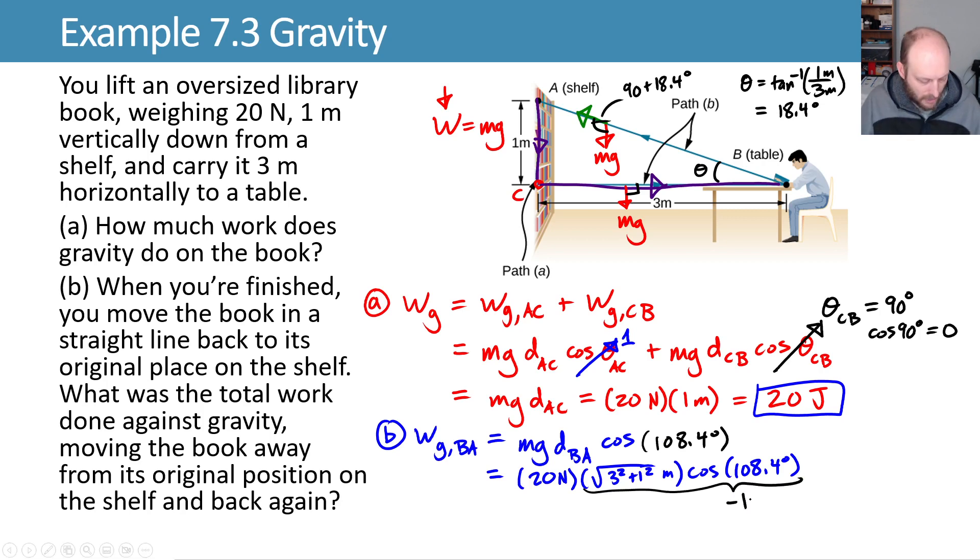And these terms right here do something kind of interesting. They give us a negative 1. That's because the path we're taking back consists of moving this way and moving this way and we only care about, or gravity only cares about when we're moving up or down. And the up or down distance we end up moving is just 1 meter.